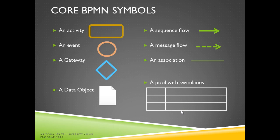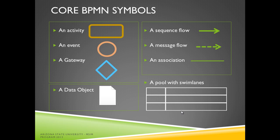The core BPMN symbols consist of the following: activities, events, and gateways, which are flow objects. A sequence flow, a message flow, and an association are connecting objects. A data object is an artifact, and a pool with swim lanes is considered a swim lane.